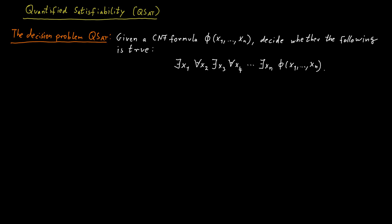This might be a bit difficult to parse and understand at first. So it might be helpful to look at this in a slightly different way. We can look at this problem as a game between two players. We have the existential player, let's call her Alice, and a universal player, let's call him Bob.